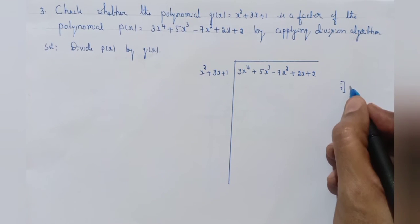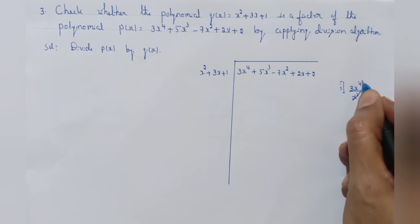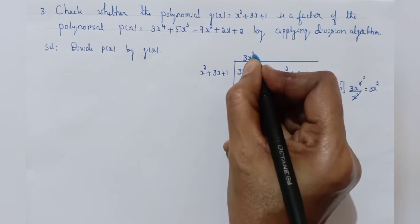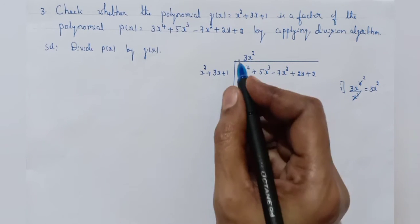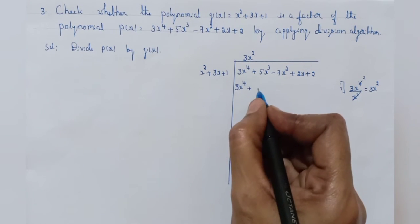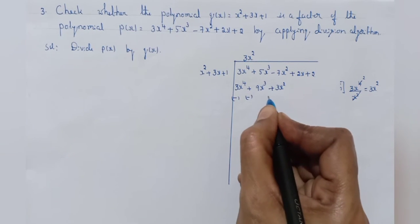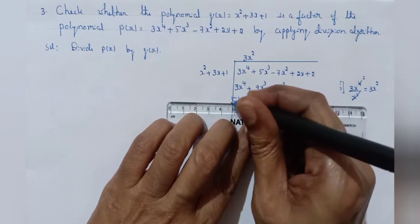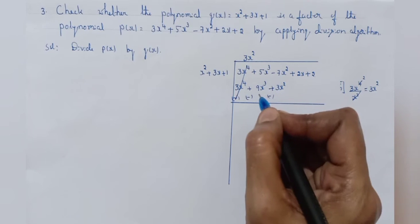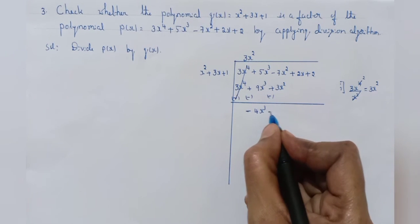Divide the first term of the dividend by the first term of the divisor: 3x to the power of 4 by x square. Cancel x square — you will get 3x square. Write 3x square in the quotient. Multiply x square plus 3x plus 1 by 3x square: 3x to the power of 4 plus 9x cube plus 3x square. Change the signs of the lower terms. Plus 3x⁴ minus 3x⁴ get cancelled.